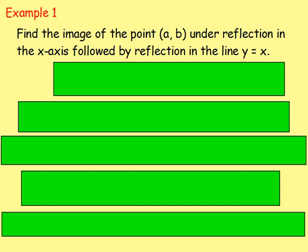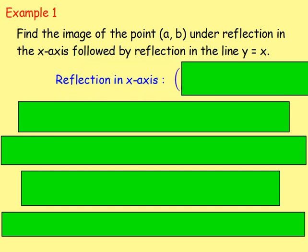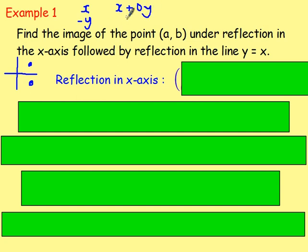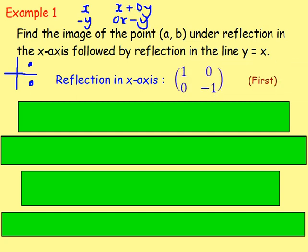Example 1: find the image of the point AB under reflection in the x-axis, followed by reflection in the line y equals x. First, let's find the matrix associated with reflection in the x-axis. If you have some point (x, y) and reflect it in the x-axis, it ends up at (x, −y). Writing that out: x = 1x + 0y, and −y = 0x − 1y. Taking just the coefficients gives the matrix: [1, 0; 0, −1].